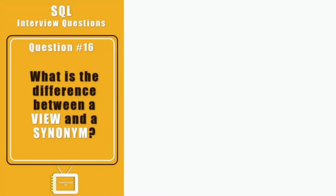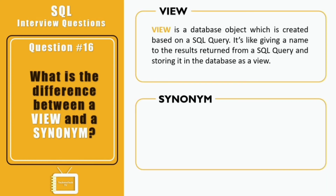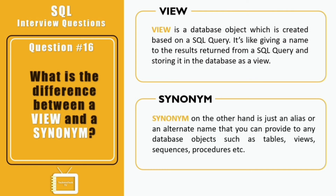Question sixteen: what is the difference between a view and a synonym? A view is a database object created based on a SQL query — it's like giving a name to the result of a SQL query and storing it in the database. If the query result changes, the view data also changes. A synonym, on the other hand, is just an alias or alternative name that you can give to any database object such as tables, views, sequences, procedures, etc. A synonym is created for a single database object, whereas a view can be based on a query joining multiple tables.